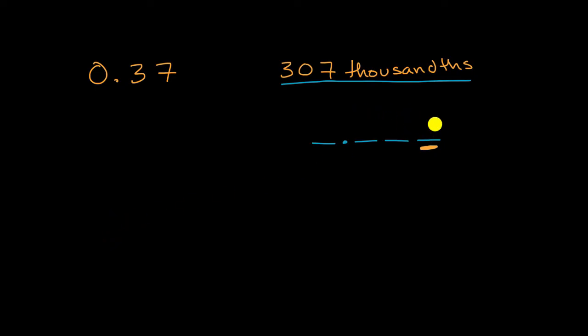So one way to view 307 thousandths is that we have 307 of this place right over there. So we could just write the seven there, the zero there, and the three over there. This over here would be 307 thousandths. And so we would have no ones.